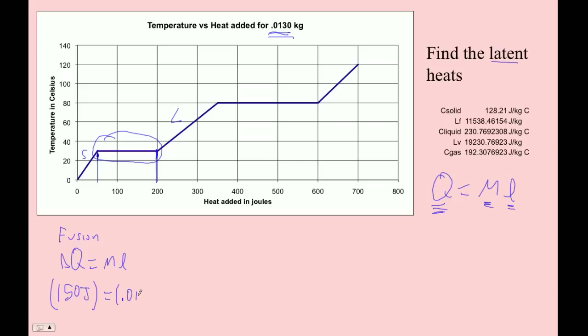And then the mass is 0.013, and then L is what we don't know. So 150 divided by 0.013 is 11,538, and that's just joules per kilogram. So that is our latent heat of fusion. And indeed, that's what it's supposed to be.